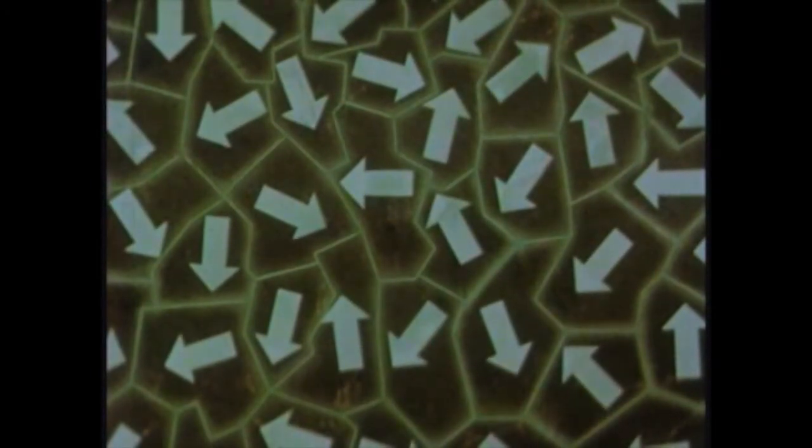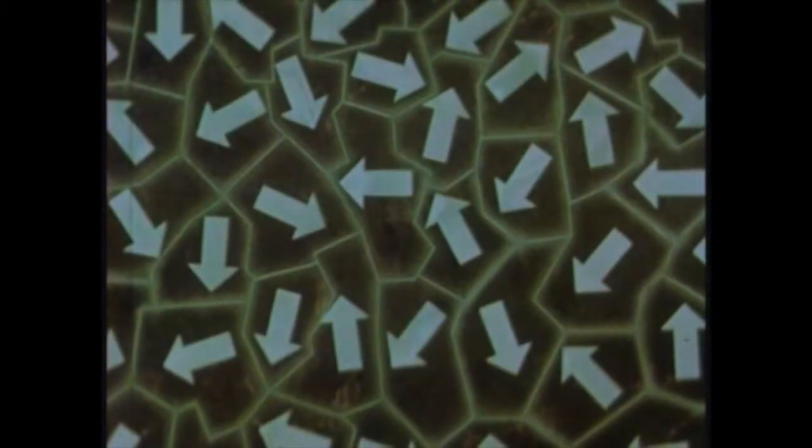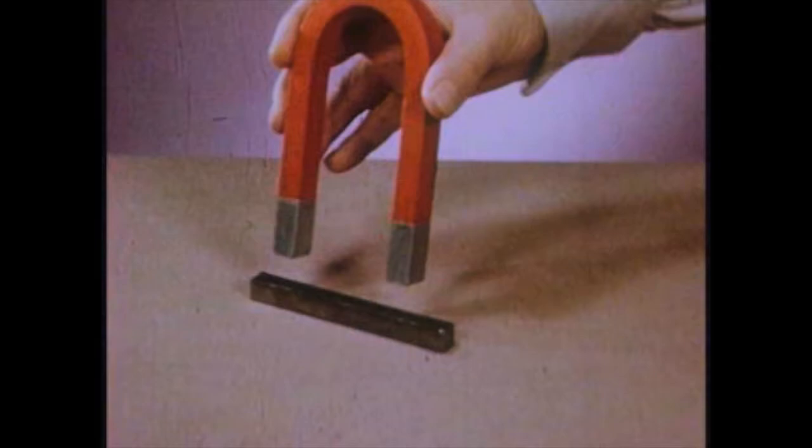Magnetic material, that is, material capable of being magnetized, is made up of such domains pointing in all directions. When these domains all point in the same direction, we have a magnet.